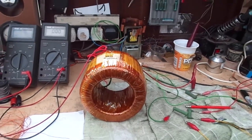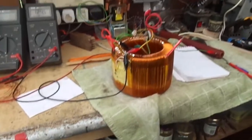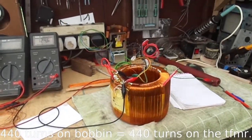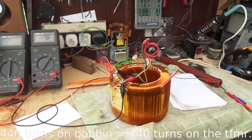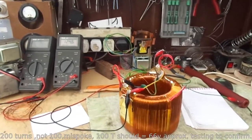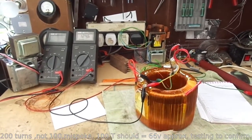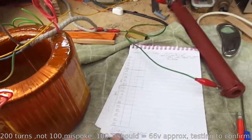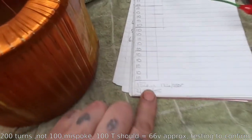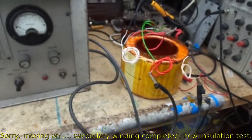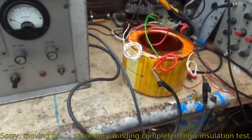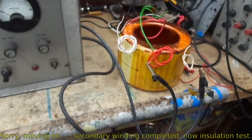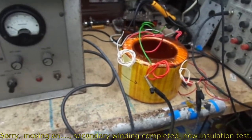I've wound a bobbin with 100 turns on, and I'm just giving it a loading test. 100 turns gives us 132 volts.